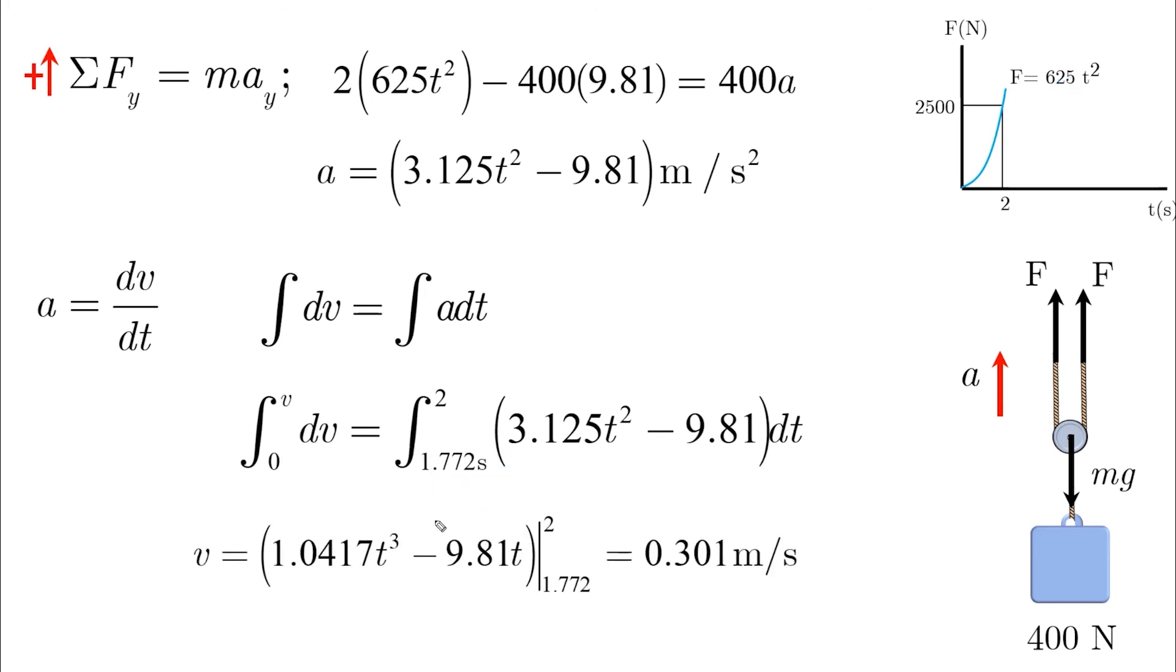By doing that, we do the integrations, we get v as a function of time, we apply the time limits, and we will get the velocity as 0.3 meters per second.